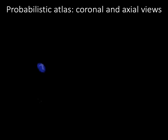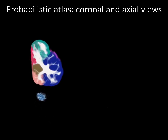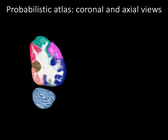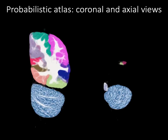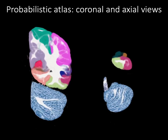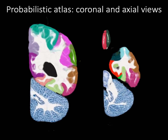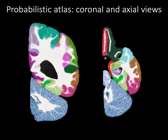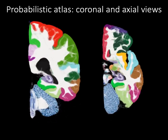Here we show videos for coronal slices on the left and the axial slices on the right. The coronal view progresses from posterior to anterior, while the axial view goes from inferior to superior.